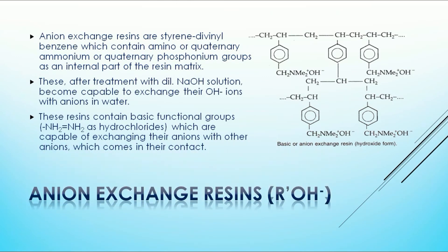Similarly, anion exchange resins are helpful to remove anions from water. The basic resin is mostly styrene-divinylbenzene which contains amino or quaternary ammonium or quaternary phosphonium groups as an internal part of the resin matrix, which after treatment with dilute NaOH solution becomes capable to exchange their OH- ions.